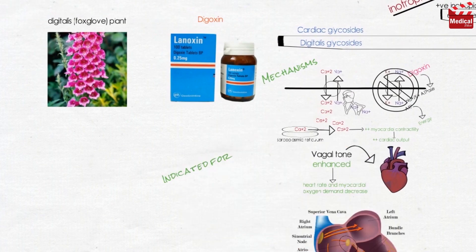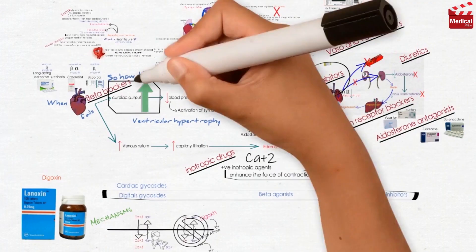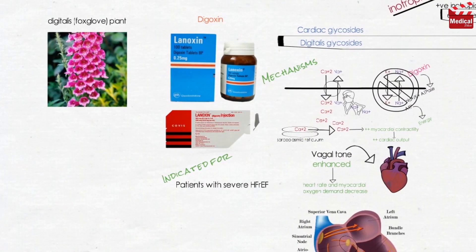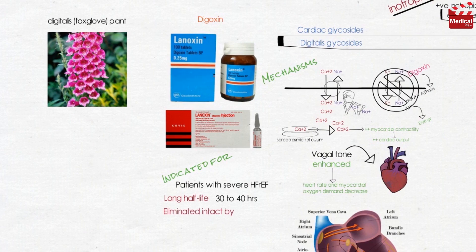Digoxin therapy is indicated in patients with severe heart failure with reduced ejection fraction, after initiation of ACE inhibitor, beta blocker, and diuretic therapy. Digoxin is available in oral and injectable formulations. It has a long half-life of 30 to 40 hours. It is mainly eliminated intact by the kidney, requiring dose adjustment in renal dysfunction.